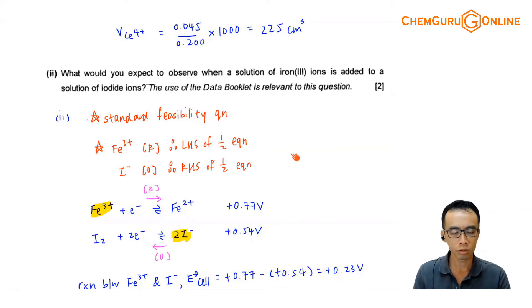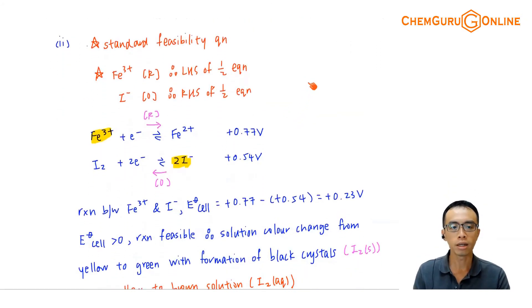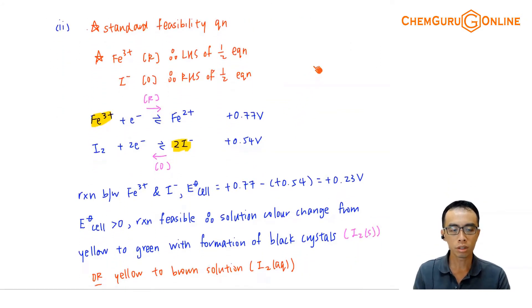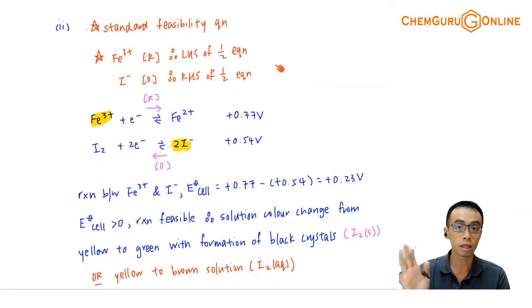So, comparing this as mentioned, if I decide that my iron 3 plus will be reduced, I will choose the iron 3 plus. It will be on the left-hand side of the half equation. I minus, it is oxidized. I will find this guy on the right-hand side of the half equation.